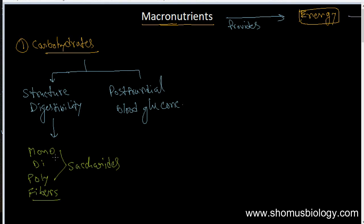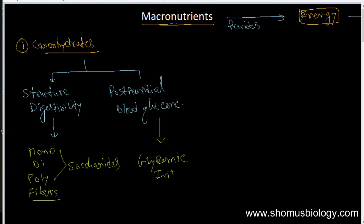Monosaccharide means made with only a single unit. Di means made with two units. Poly means made up of multiple units, more than two. The post-prandial blood glucose level is measured by the glycemic index.